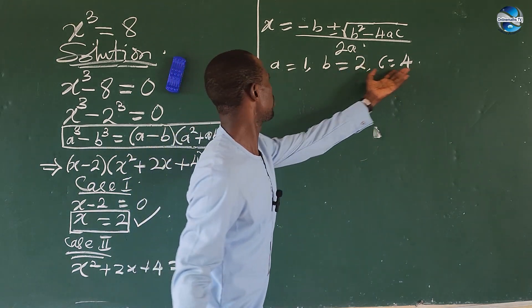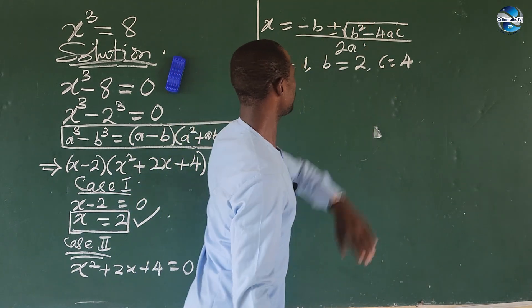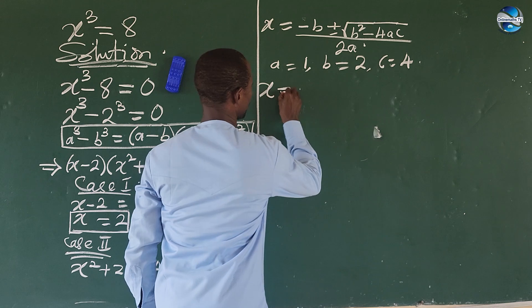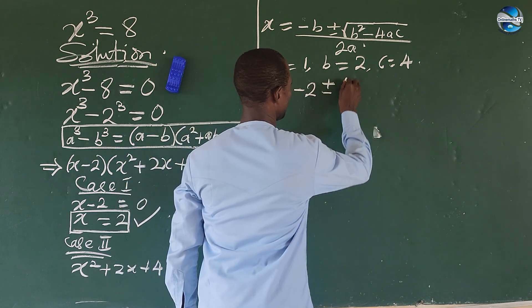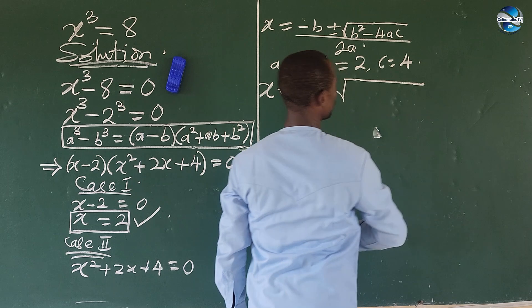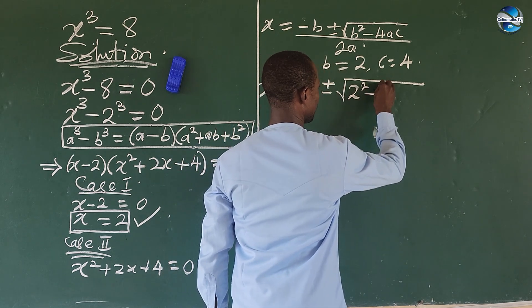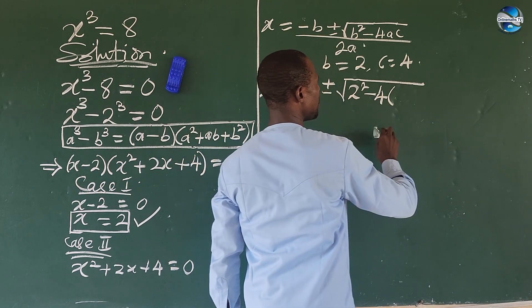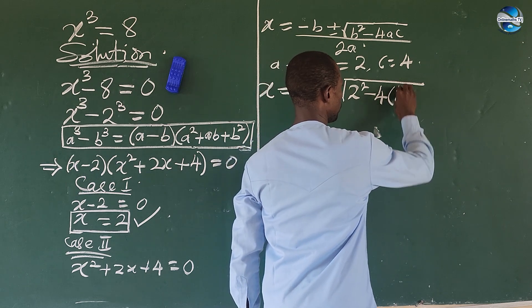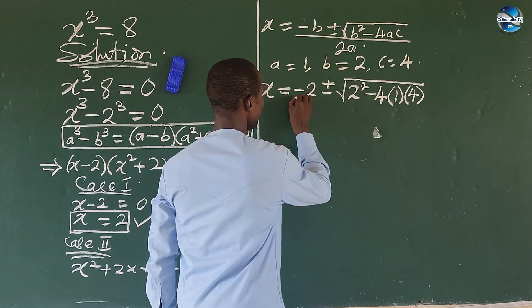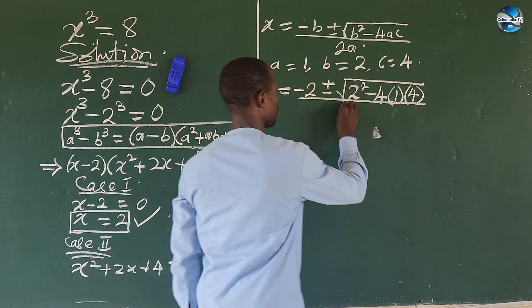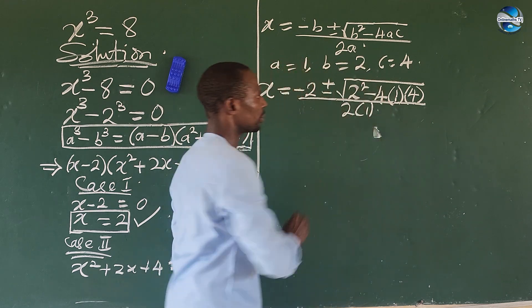So what do we do? Let's plug the whole of these values into the formula. So x will now be equal to -2 ± √(2² - 4(1)(4)) all over 2(1).